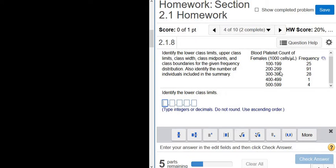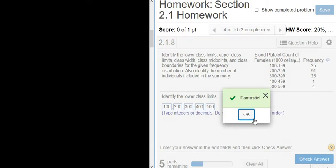The upper class limits are the other numbers here, 199, 299, etc. Let's type in the lower class limits, so 100, 200, 300, 400, 500. That should be all of them. Let's try it. Good stuff.